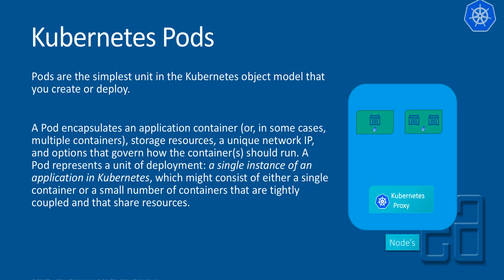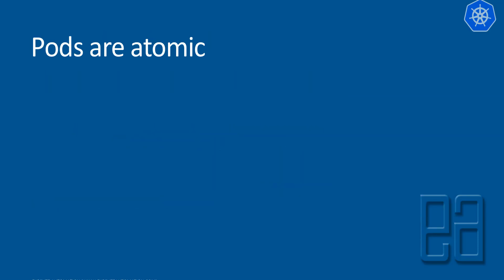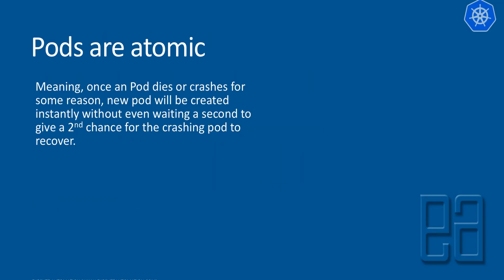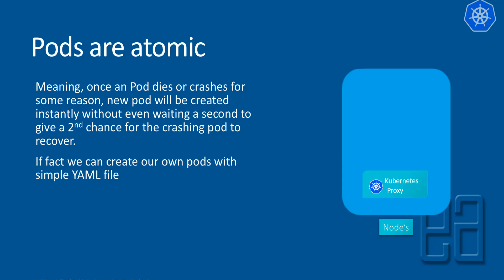As you can see in this diagram, a pod can have one single container running in it — a container deployed by a container management application such as Docker or Rocket. It can be one container, or two or three containers that are tightly coupled and share resources. Even though different containers run within the same pod, they all share the same IP address. It is always good practice to have a single pod with a single container. Pods are atomic — meaning once a pod dies or crashes, a new pod is created instantly without giving the crashing pod a chance to recover.